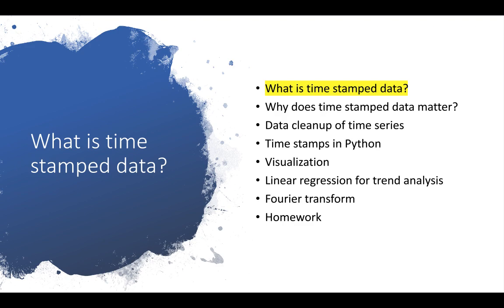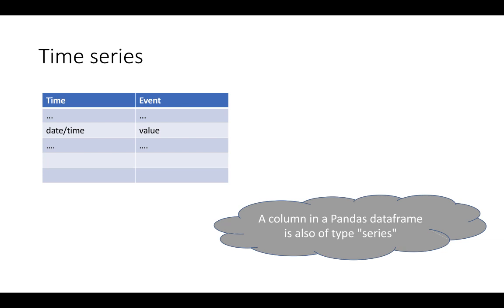We'll cover a quick introduction to what is timestamp data, and then move on to why it matters. Time series or timestamp data might seem like a strange concept, but you've already seen it. Think of it as a column where you have a time — either like 11 a.m. or a date — and then some event. Typically this is either a string, a numeric value, or a categorical variable. You might think, 'Oh, this is like a series' — a series in pandas has an index and some value that goes with it.